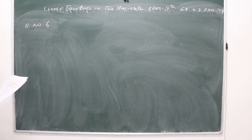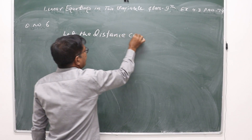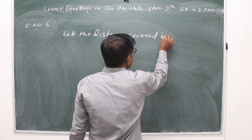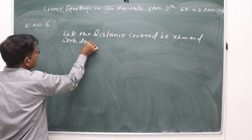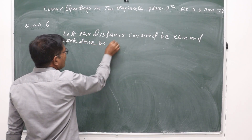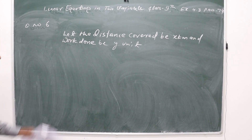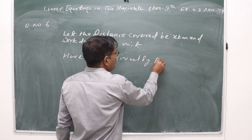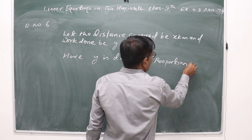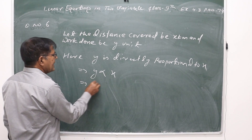For question number 6, first we write: let the distance travelled be x km and work done be y units. Since y is directly proportional to x, this implies y = kx, where k is a constant. Since the constant force is 5 units, we replace k with 5.